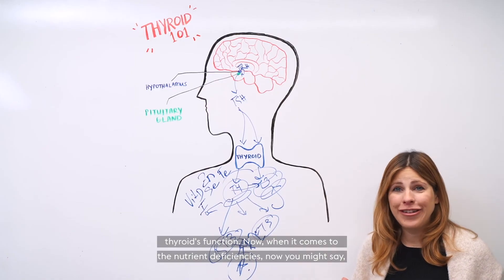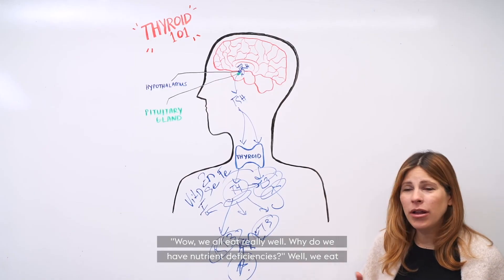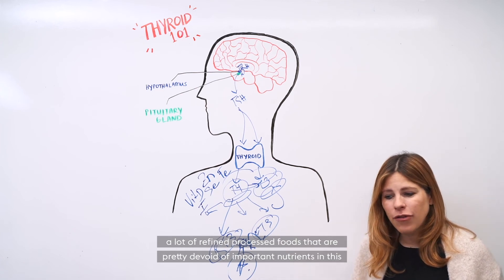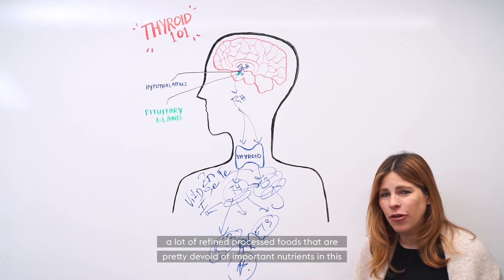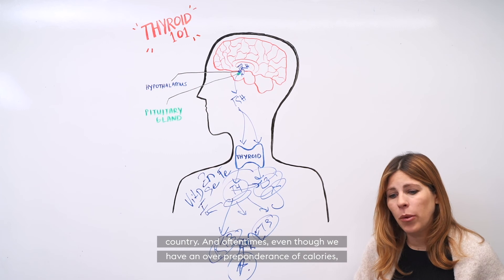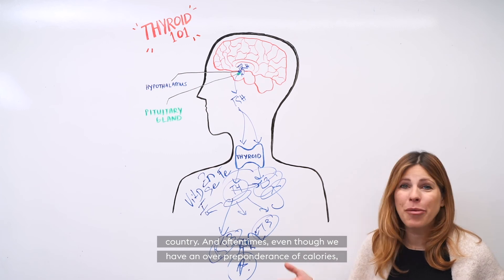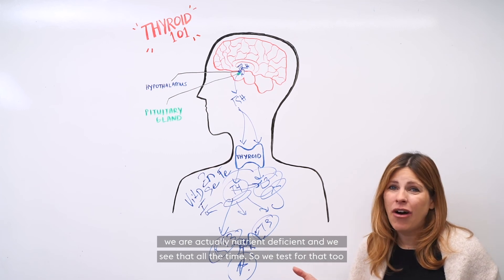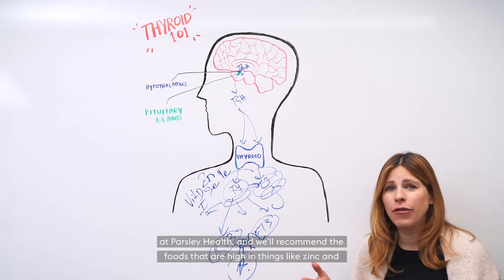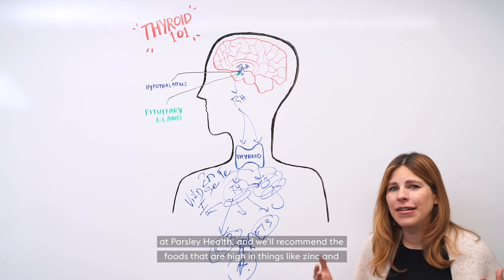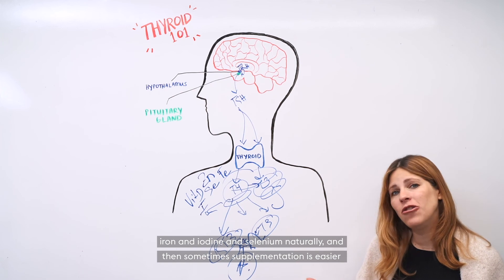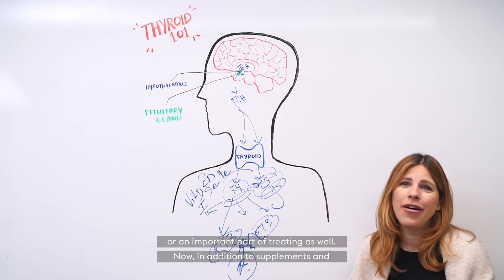Now when it comes to nutrient deficiencies, you might say, wow, we all eat really well, why do we have nutrient deficiencies? Well we eat a lot of refined processed foods that are pretty devoid of important nutrients in this country, and oftentimes even though we have an overpreponderance of calories, we are actually nutrient deficient. And we see that all the time at Parsley Health. We'll recommend the foods that are high in things like zinc and iron and iodine and selenium naturally, and then sometimes supplementation is an important part of treating as well.